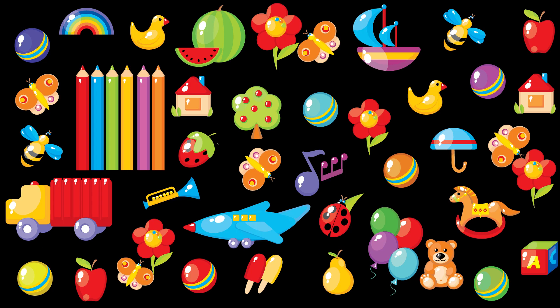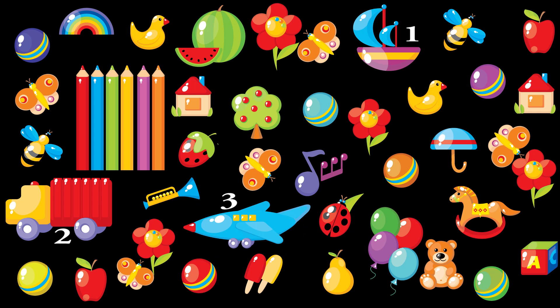Now let's go on to the next question: let's count the different vehicles. One, two, three. There are three different vehicles here. Third question: how many color pencils are there? Oh, this one's really easy, isn't it? They're all together. There are one, two, three, four, five, six — six color pencils in this image.